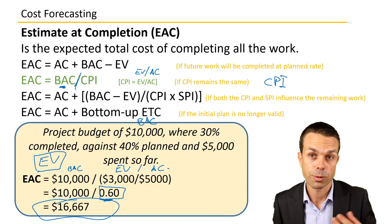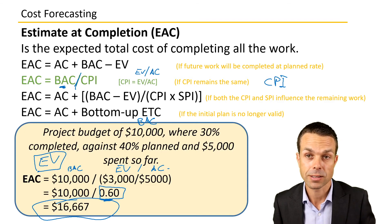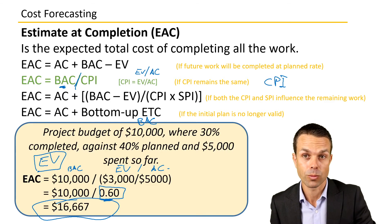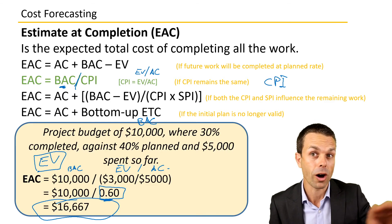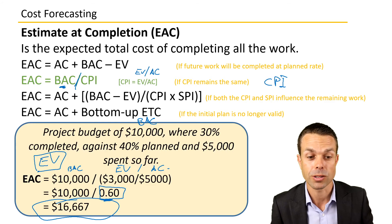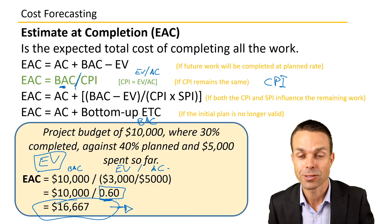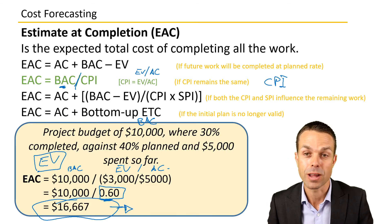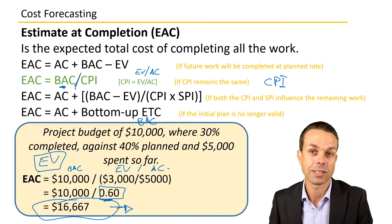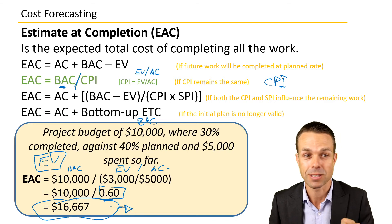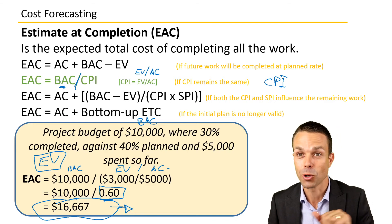So if the cost performance index is going to impact our project, we're already behind and we'll remain behind for the rest of the project. This formula takes that into account, giving us a higher estimate of $16,667 compared to the first method. This is really important to know — when the CPI influences the estimate at completion, you use this formula. There are two more methods to cover.